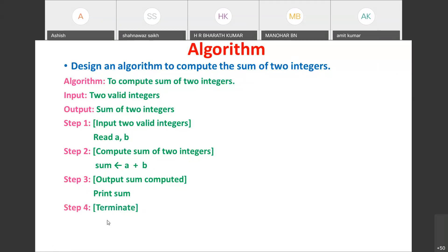The last step includes the comment [end of algorithm] and the instruction 'end' or 'stop'. To summarize: we specified the algorithm name, then the input, then the output, then the sequence of steps — read two integers, compute the sum, print the sum, and finally end. More algorithm and flowchart problems will be discussed in tutorial classes.